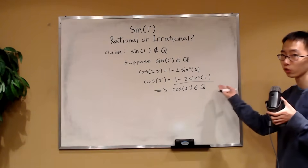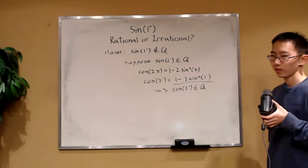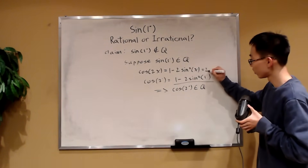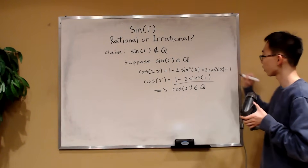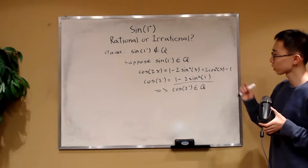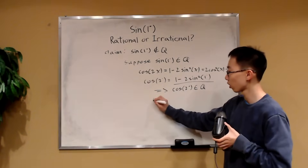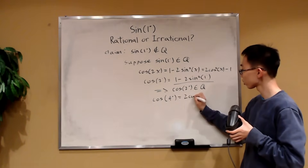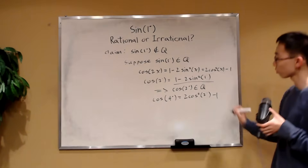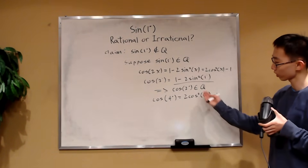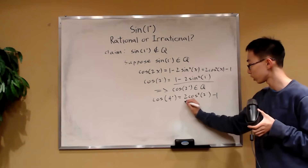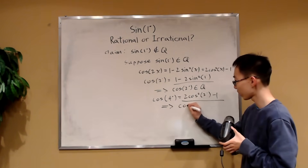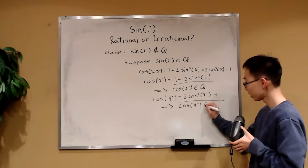So we've just proven, under this assumption, that cosine of two degrees is rational. Now, what if we play around with the cosine double angle formula again? This can also be written as 2 cosine squared of x minus 1. If you plug in x equals 2 degrees, you get cosine of 4 degrees equals 2 cosine squared of 2 degrees minus 1. Because cosine of 2 degrees is rational, cosine of 4 degrees is also rational.